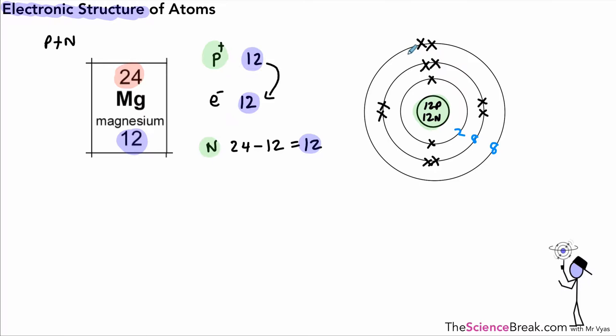So here we have our atom of magnesium. Now in terms of doing the electronic structure, you can show it either on a diagram like this, or we can write it out in a form like this. So we have two electrons in the first shell, eight in the second, and two in the last shell.